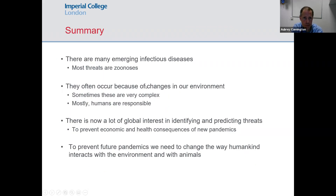In summary: there are an awful lot of emerging infectious diseases and most of them are zoonoses. They often occur because of changes we've imposed on the environment — sometimes very complex changes, but mostly it's our fault as humans. There's now a lot of global interest in identifying and predicting threats, which is necessary to prevent huge health and economic consequences. Preventing future pandemics will really need a change in the way that we interact with the environment and with animals.